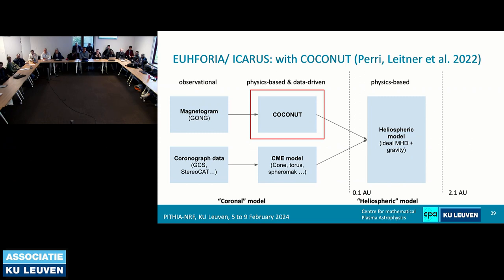COCONUT stands for COOLFluiD Coronal Unstructured Tool, because it's based on the COOLFluiD framework. The challenge, however — you can always make a code with a PhD or master student — is that we're interested in forecasting ability. We don't want a code that takes 40 hours on a supercomputer. Because these coronal mass ejections can arrive even in 18 hours, they can be very fast. So if you're a forecaster, you're interested in having your forecast within a few hours. The operational requirement we put on ourselves is to have these calculations done in two to three hours.